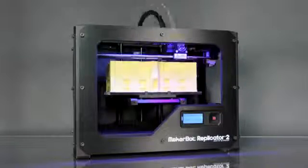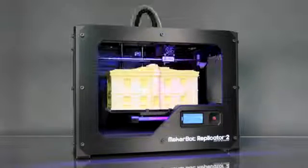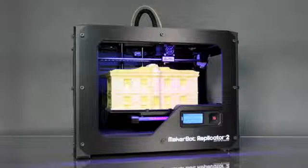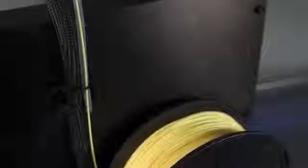The material that the MakerBot Replicator 2 desktop 3D printer uses is a renewable bioplastic called PLA. When you tell the MakerBot Replicator 2 to make something, it begins by pulling the PLA filament that's spooled in the back up through this tube and into the extruder. The extruder heats it up and squishes it through a very small hole onto the build plate.